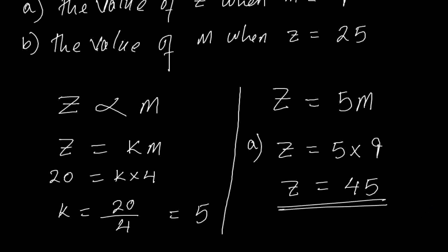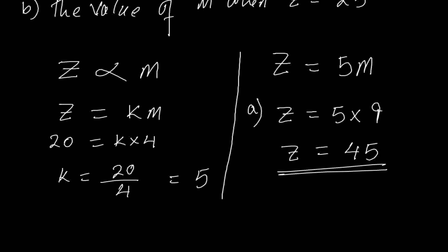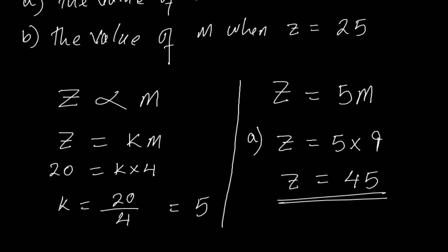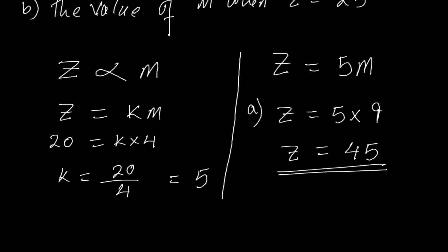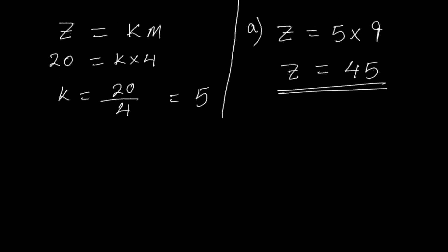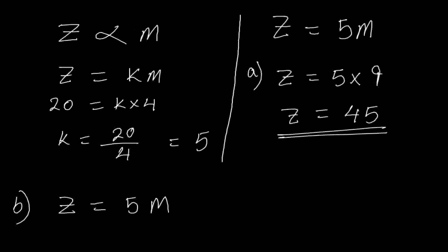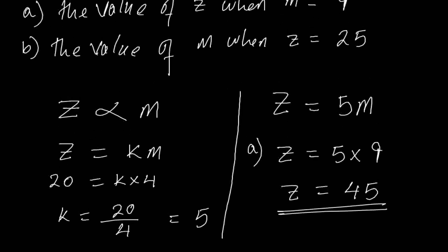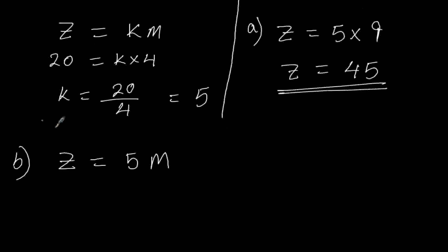Then part B says find the value of M when Z equals 25. So let me do part B here. Part B is - let's first write our equation: Z equals 5M. We want to find the value of M when Z is 25. So Z is 25, I put here 25 equals 5 times M.